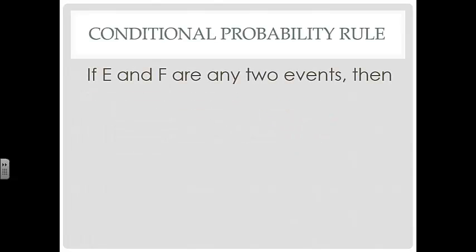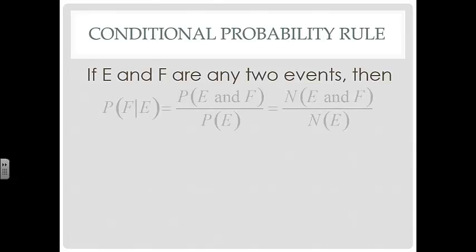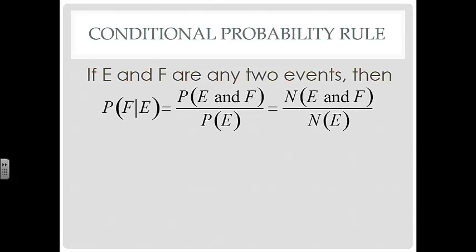If E and F are any two events, then the conditional probability rule says that the probability of F given E is equal to the probability of E and F over the probability of E, which is also equal to the number of outcomes that include E.